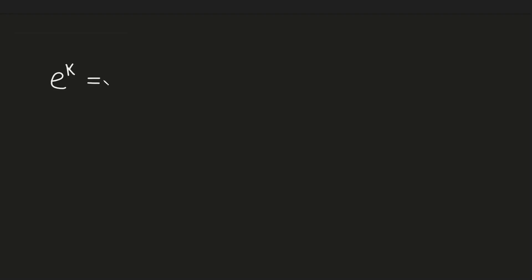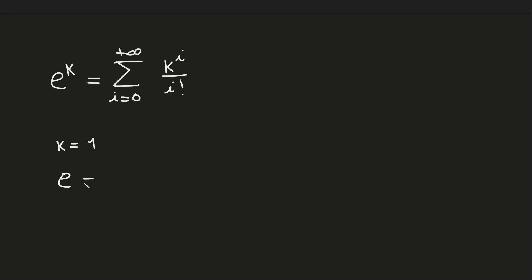We want to show e to the power of k equals the sum with index i starting from 0 to infinity of k to the power of i divided by i factorial. If we consider a special case like k equals 1, we get another representation of e — namely, e equals the sum of 1 divided by i factorial.